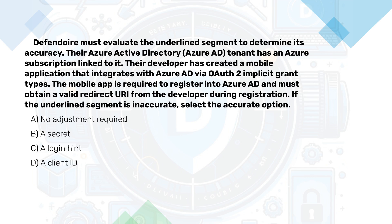Our Azure Active Directory tenant has an Azure subscription linked to it. Our developer has created a mobile application that integrates with Azure Active Directory via OAuth implicit grant type. The mobile app is required to register into Azure Active Directory and must obtain a valid redirect URI from the developer during registration.